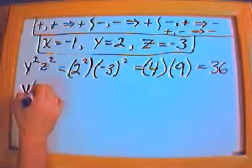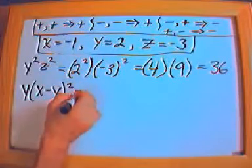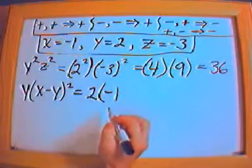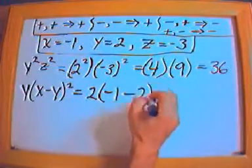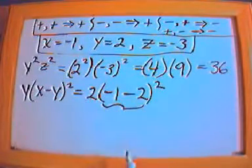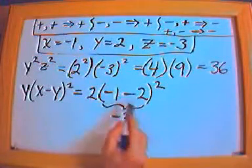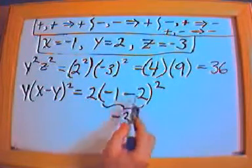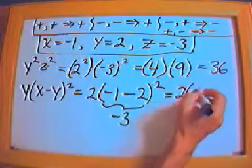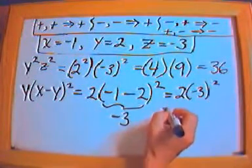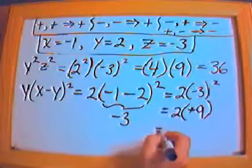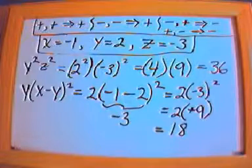Let's say I have y times (x minus y) squared. y is 2. Inside the parentheses: negative 1 minus 2. That's basically adding two negatives, so the answer is negative, and adding the numbers gives negative 3. So this is 2 times (negative 3) squared. That equals 2 times negative 3 times negative 3, which gives positive 9. And 9 times 2 is 18, so the answer is 18.